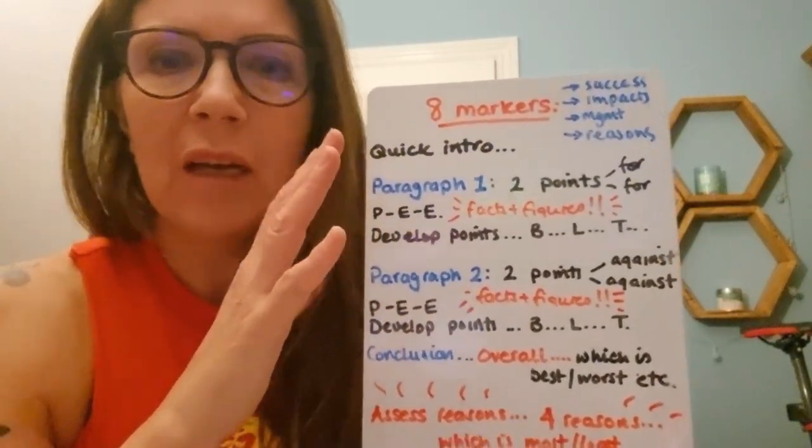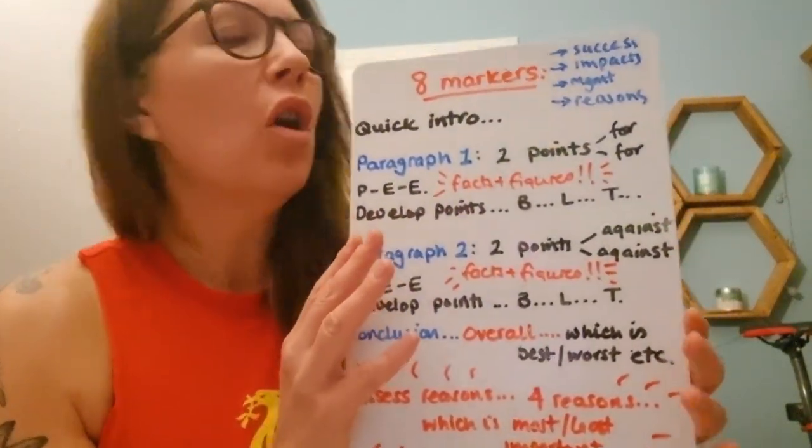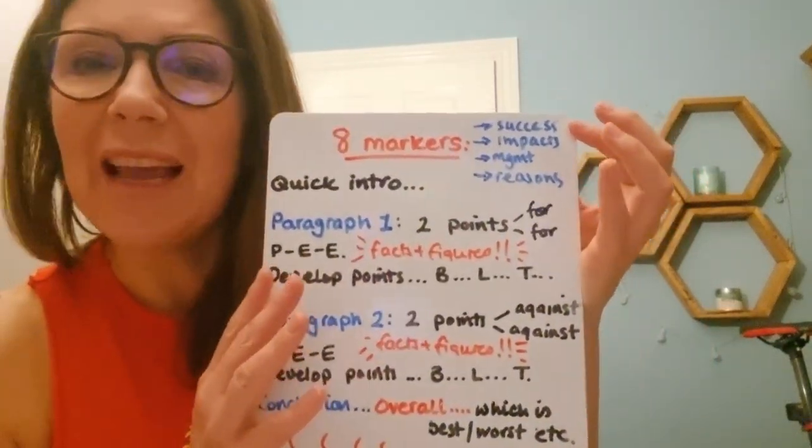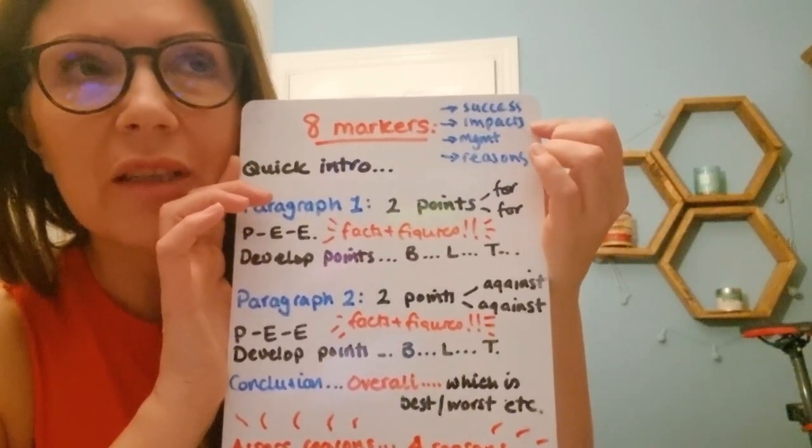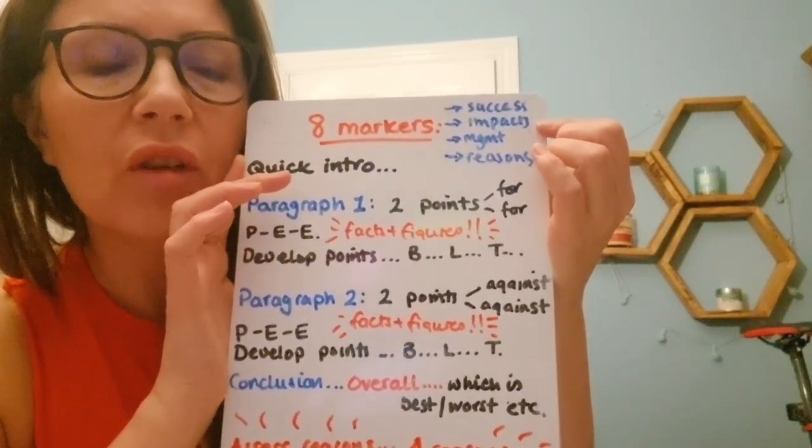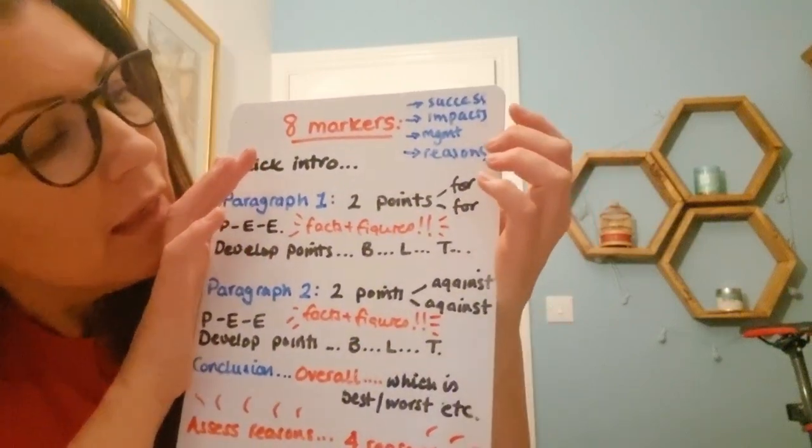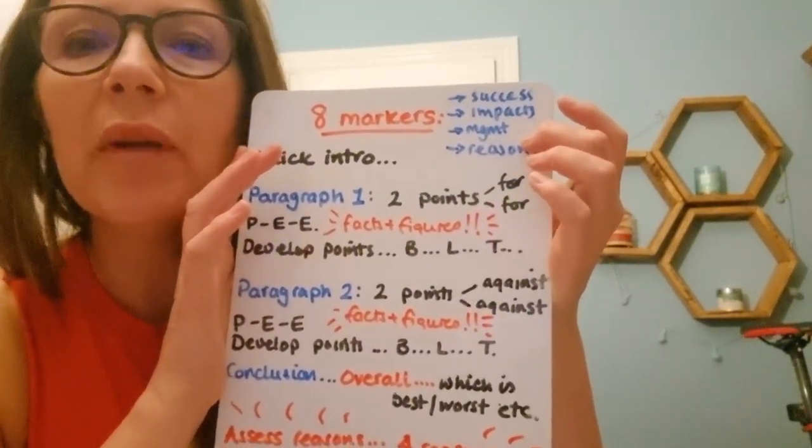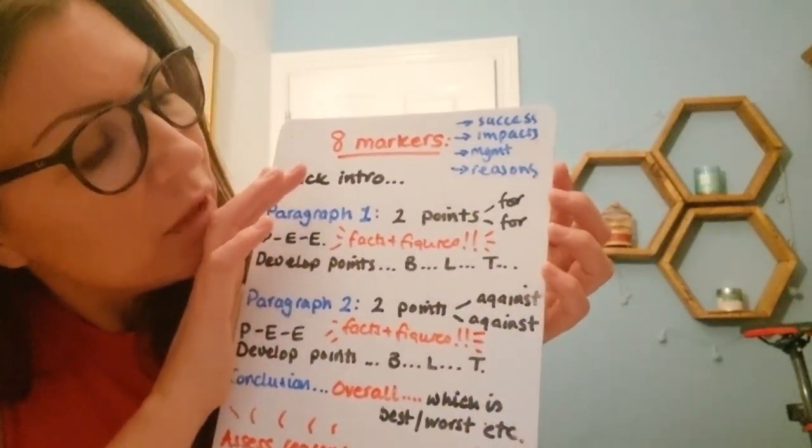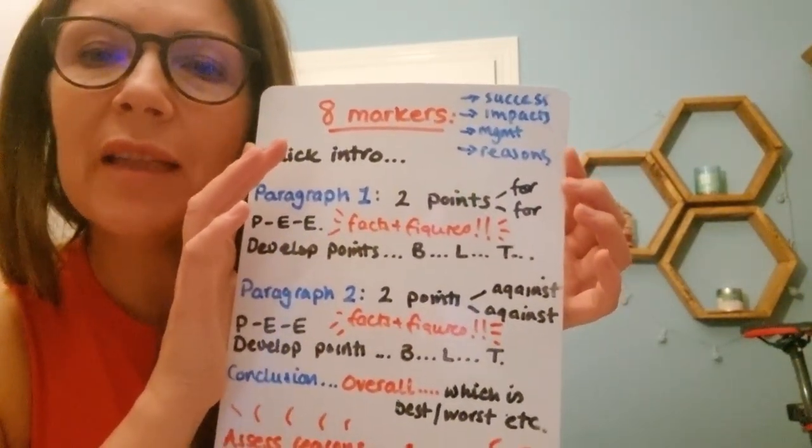So eight markers are going to basically say assess or evaluate. Now, overall, they're going to be asking you about maybe pros and cons. So up here, I've put maybe the success of different strategies and the impacts of different hazards or different top-down, bottom-up strategies, management strategies if it's top-down, bottom-up again, or could be asking you about reasons for something and we'll get to that at the bottom.